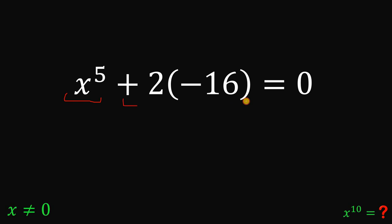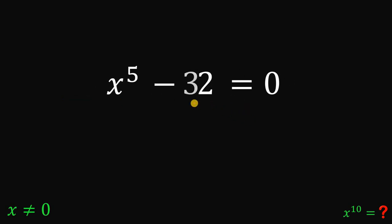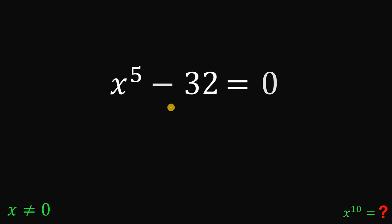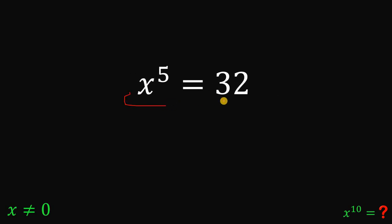So we have x raised to the fifth power plus 2 times negative 16 equals 0. Positive 2 times negative 16 is negative 32. Adding 32 on both sides, we get x raised to the fifth power equals 32.